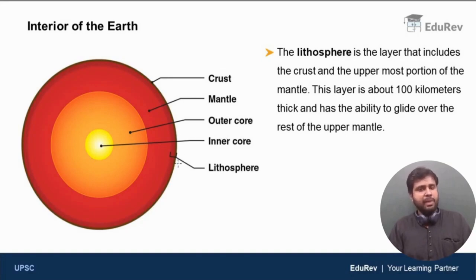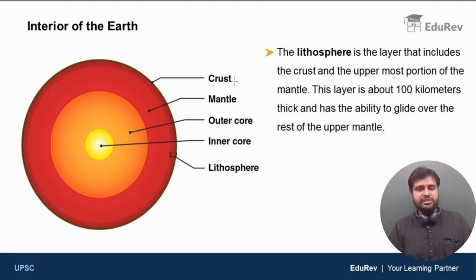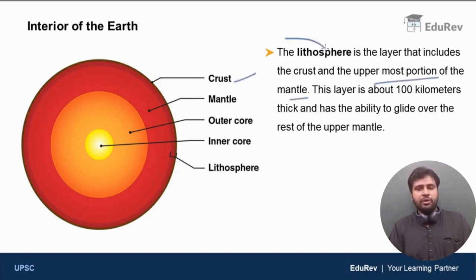Lithosphere is marked here. The first 100 kilometers is lithosphere. Lithosphere consists of the crust and the uppermost portion of the mantle. Lithosphere is solid — this is very, very important to keep in mind.